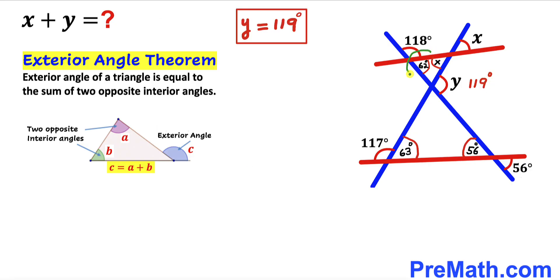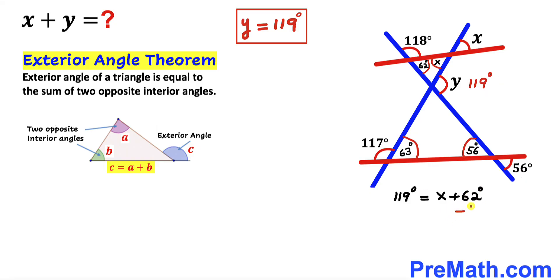Now we focus on the triangle containing angle x. Here, angle y is an exterior angle equal to the sum of the opposite interior angles x and 62 degrees. So 119 degrees equals x plus 62 degrees. Subtracting 62 degrees from both sides, our angle x turns out to be 57 degrees.